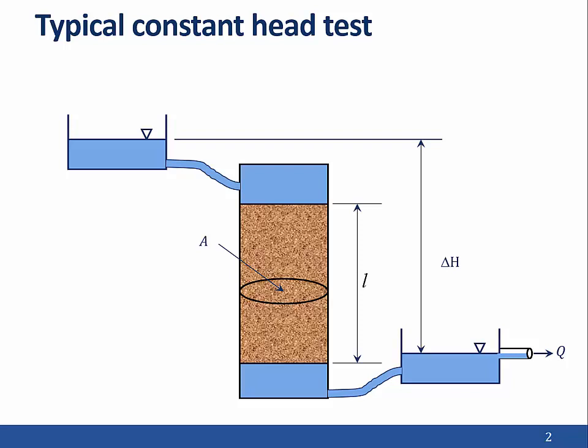To determine the hydraulic conductivity, we first compute the hydraulic gradient I as delta H over L. We then use Darcy's law, Q equals K times I times A, to compute the hydraulic conductivity. To do this, we rearrange the equation to get K on the left-hand side, giving K equals Q divided by the quantity I times A.